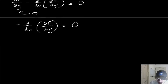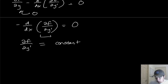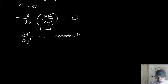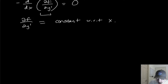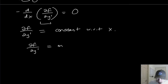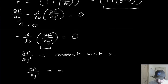This tells us that dF/dY-prime must equal some constant. We know that because if you take the derivative of something with respect to X and you get zero, it means that thing doesn't change with respect to X — the derivative measures the rate of change. So we're going to say dF/dY-prime is equal to a constant, and I'll call it M.